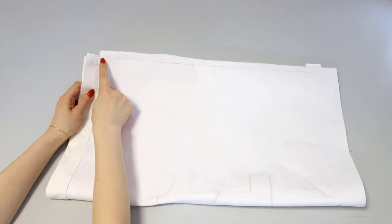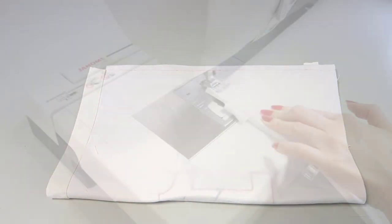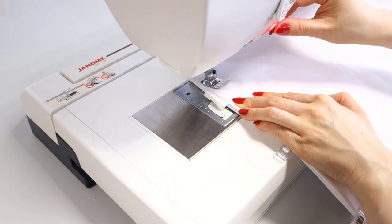Next, sew all the way from the string placement point to the bottom edge of the fabric, securing the side tab using a backstitch.